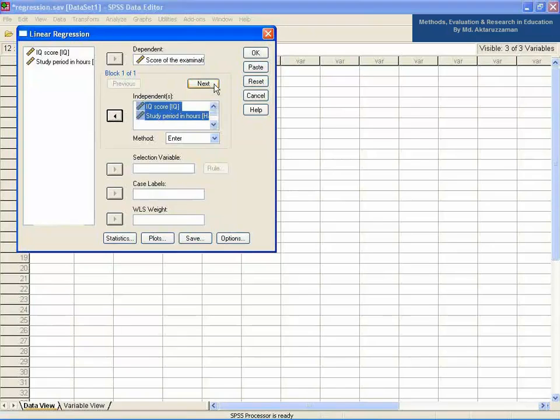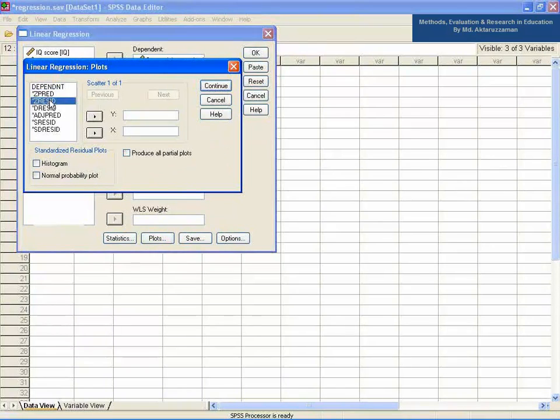Now, click Plots button and take ZRESID, which is residual, in Y and ZPRED, which is prediction, in X. Also, select Histogram and Normal Probability Plot.